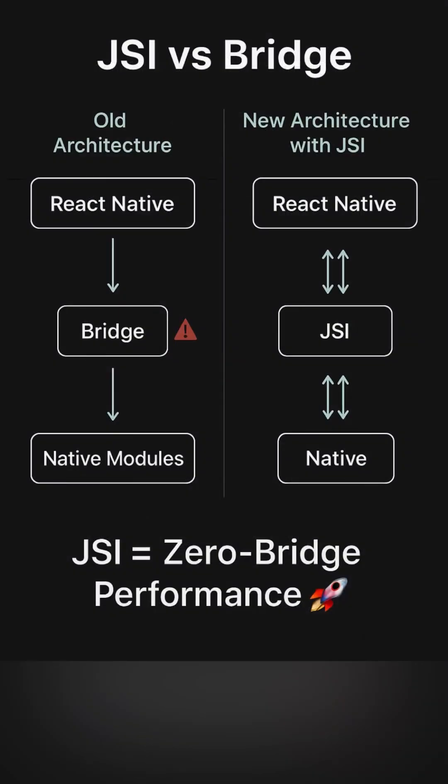Why is it so fast? Skia uses JSI to skip the old React Native bridge. That means less lag and real native performance.